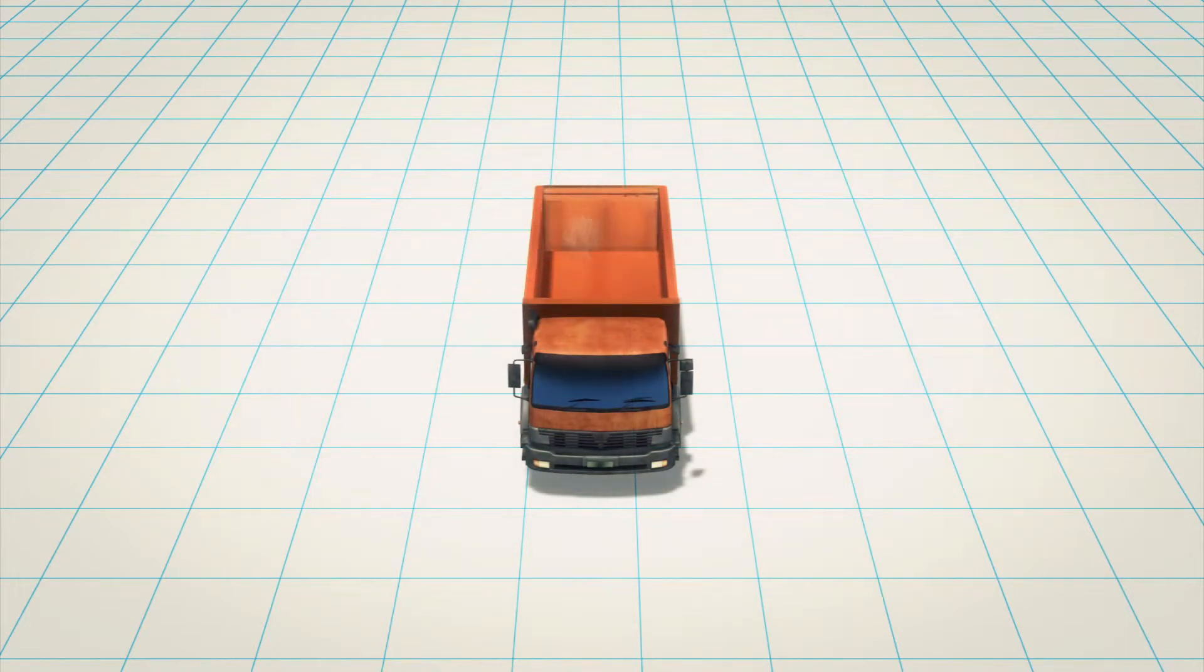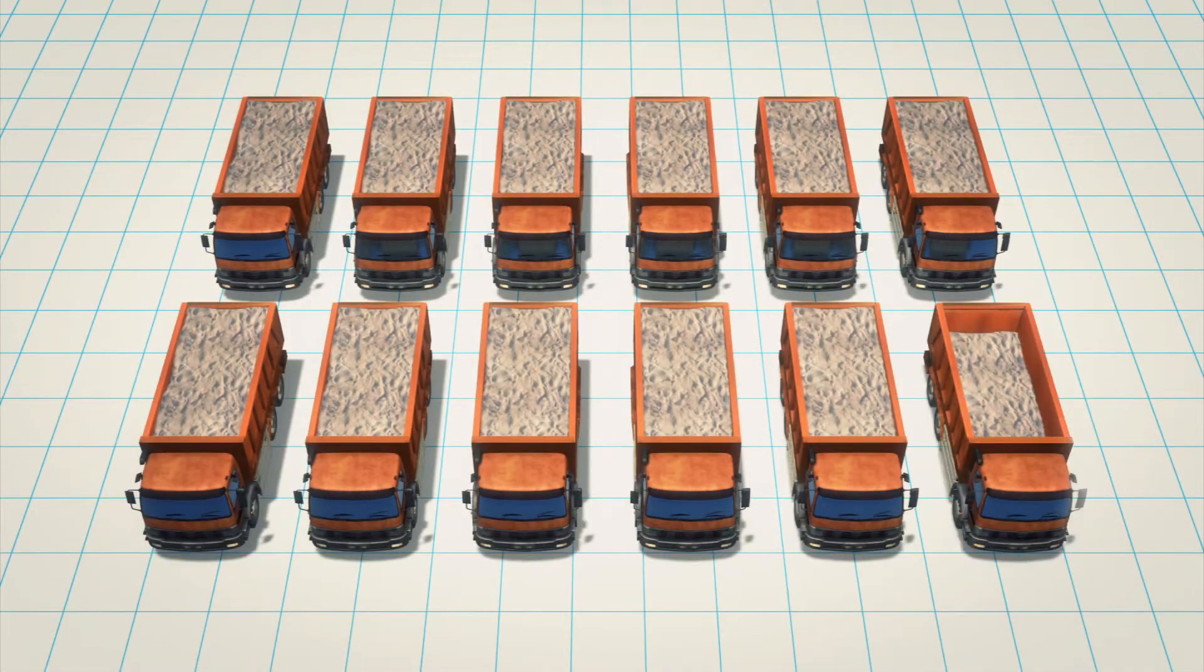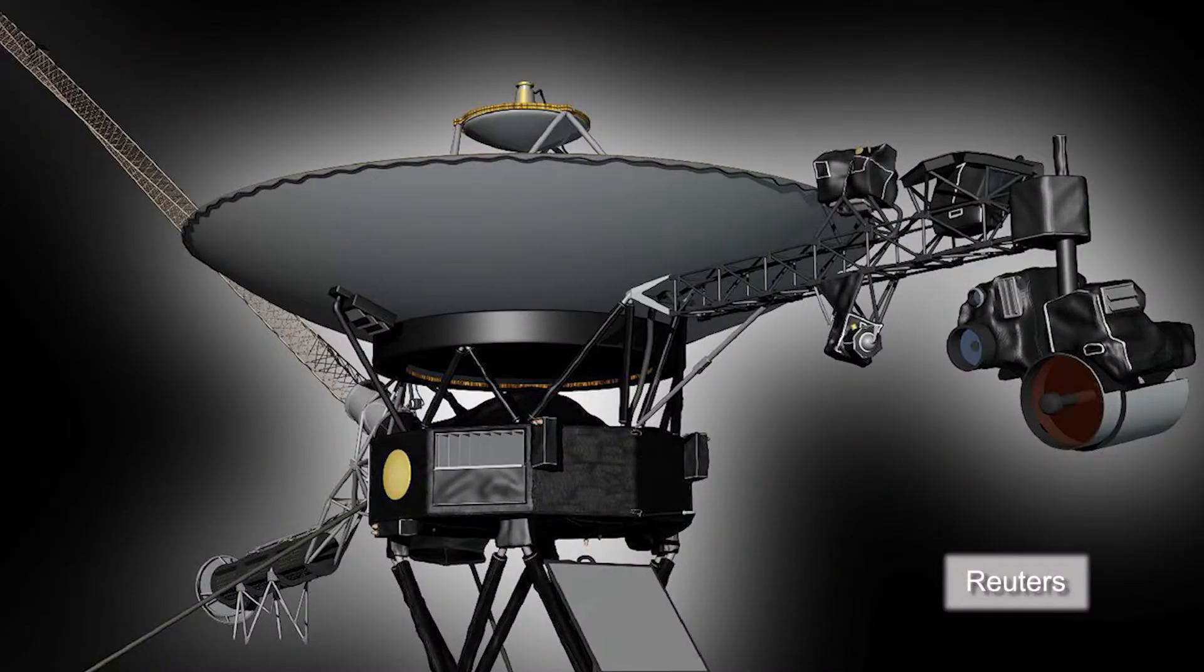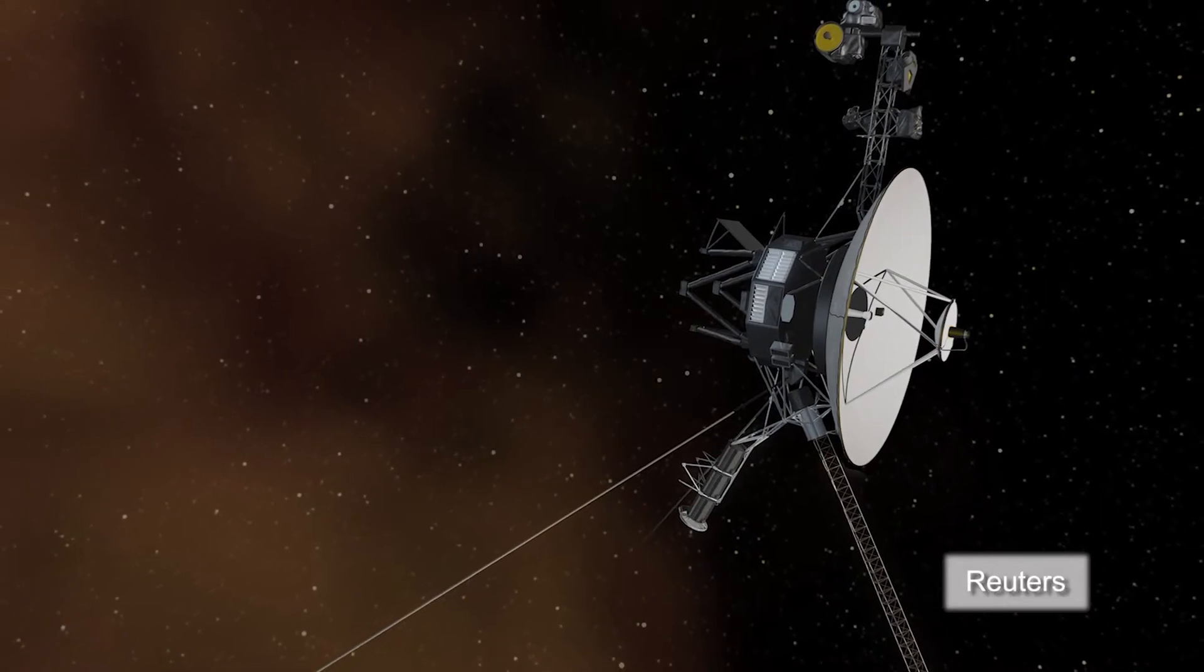If one grain of sand represented one mile, a filled dump truck would represent 1 billion miles and nearly 12 dump trucks filled with sand would represent the amount of miles that Voyager has travelled. The veteran NASA mission is almost 19 billion kilometres or 12 billion miles from home.